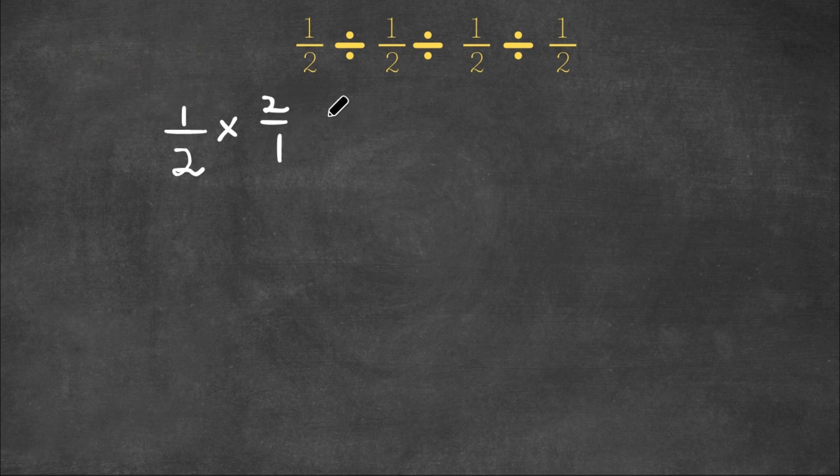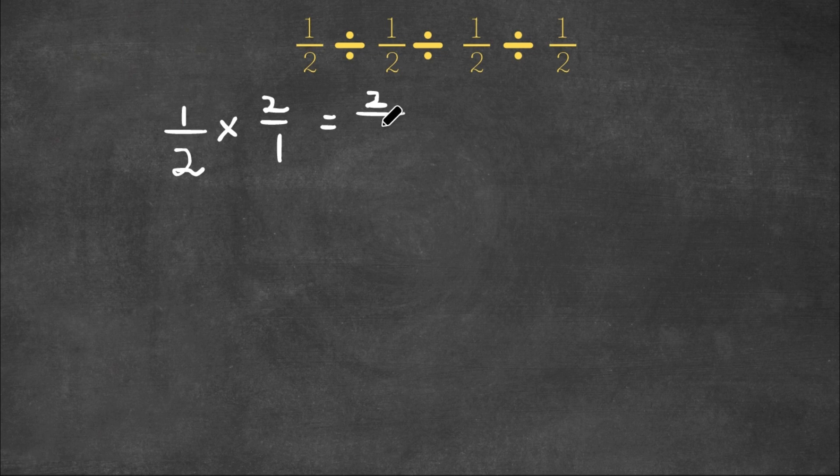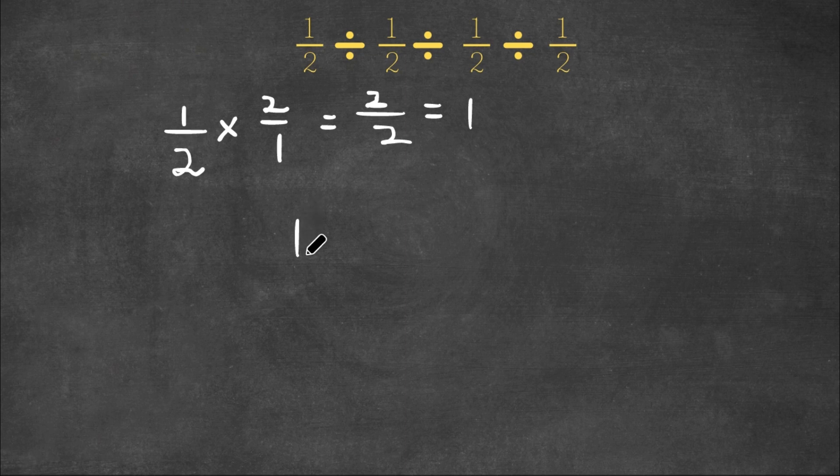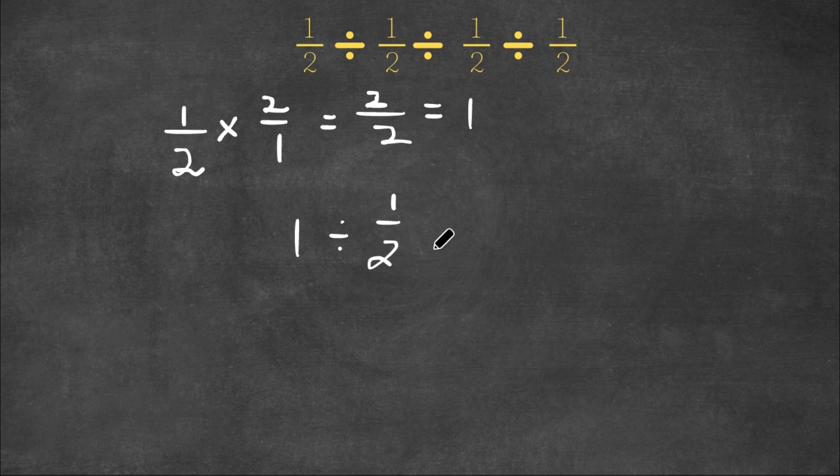And 1 half times 2 over 1, this is equal to 1 times 2 is 2, over 2 times 1 is 2, and this is equal to 1. So now we have 1 divided by 1 half divided by 1 half.